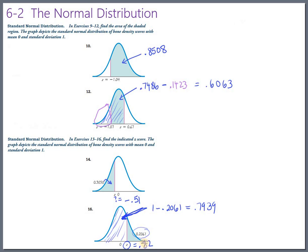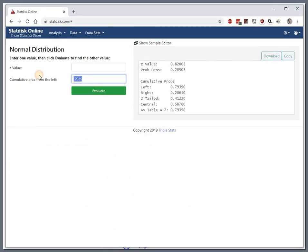A lot of times students forget that they need this area to the left, and they just put in 0.2061. Let's look at what happens if you do that. If you just put in 0.2061 and evaluate, you get a z-value of negative 0.82.